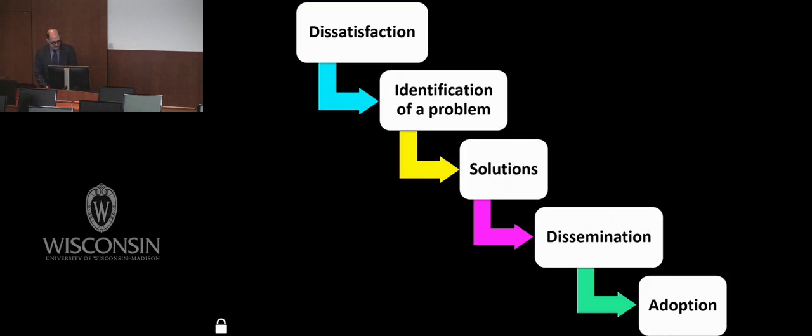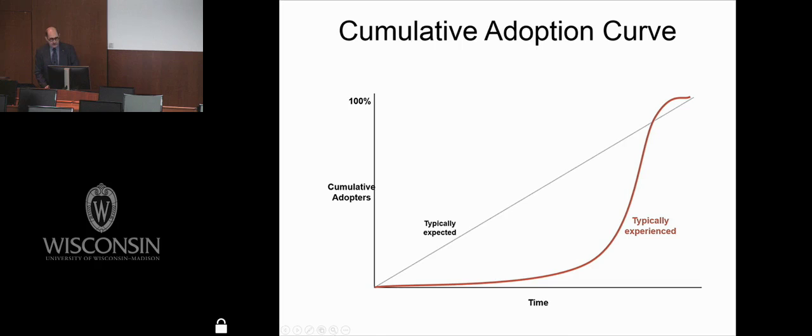So this is the process: dissatisfaction, identification of a problem, solutions, and now the dissemination and adoption of how you get something, an innovation, out there. Most people think that new ideas will be adopted in a linear fashion, but this is absolutely never the case. What we will always see is this sigmoid-shaped curve, and here to invoke Malcolm Gladwell, this inflection point is called the tipping point. So the question becomes, how do you shorten this flat point to get to the tipping point and the logarithmic phase of the curve?